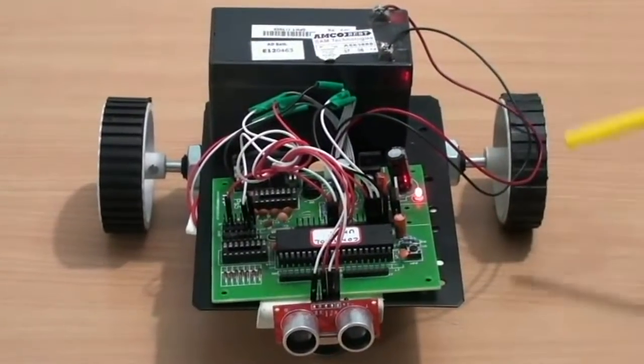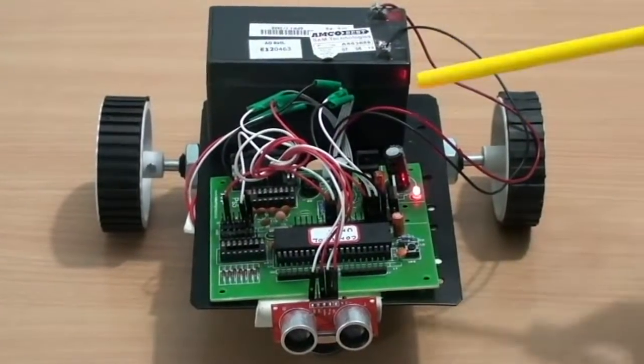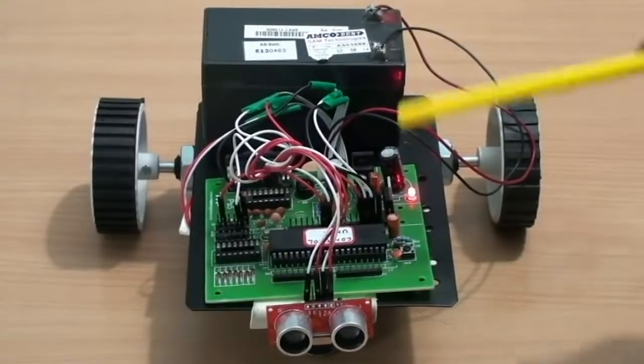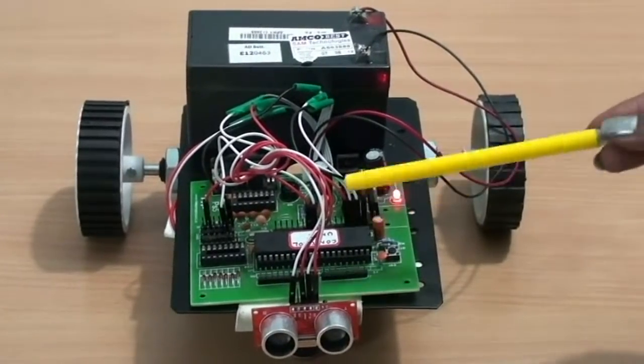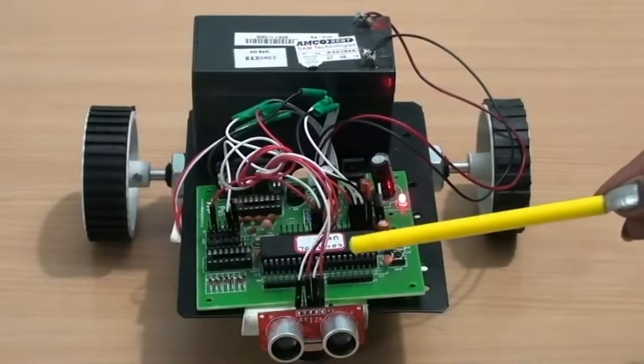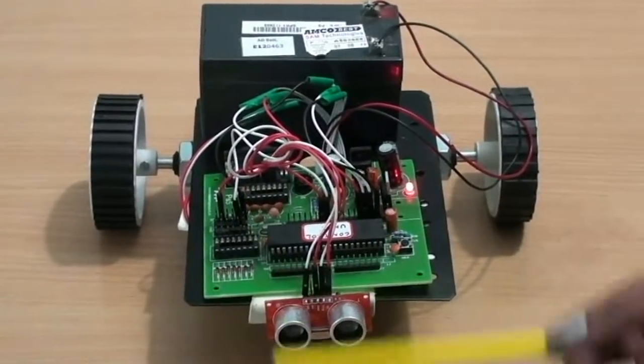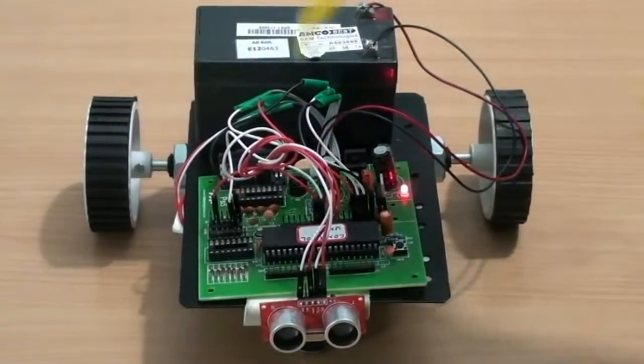This project is an ultrasonic-based obstacle avoidance robot. This is a robot which moves independently and automatically, senses the presence of an obstacle in its path, and deviates its path or stops its journey.